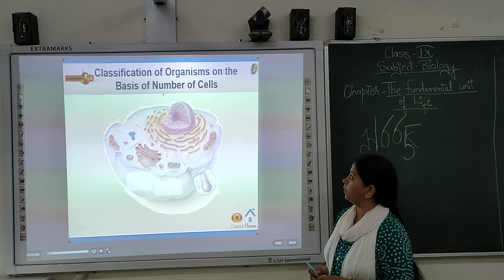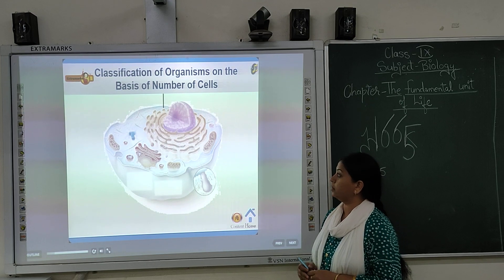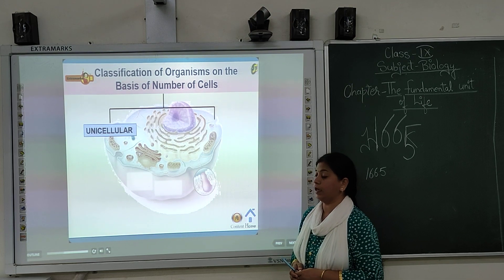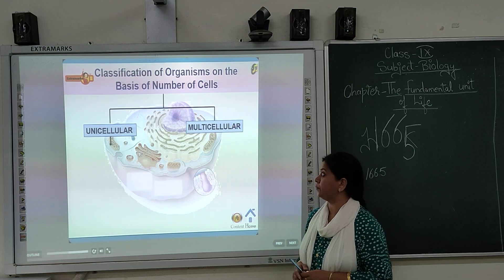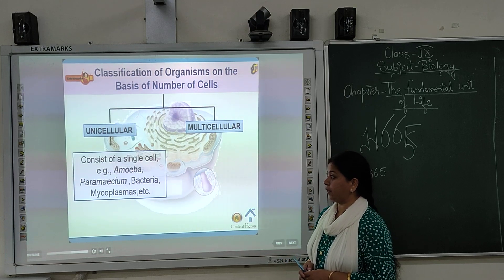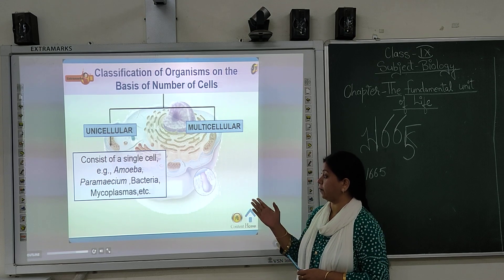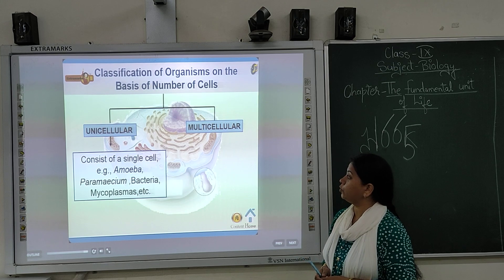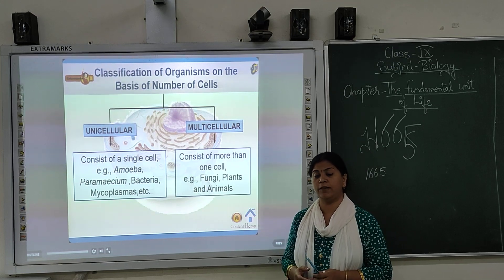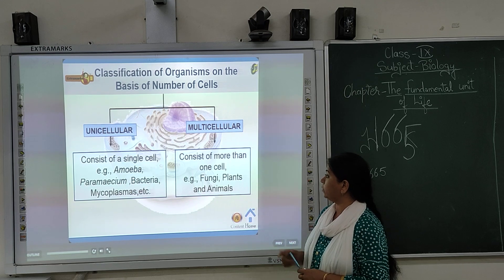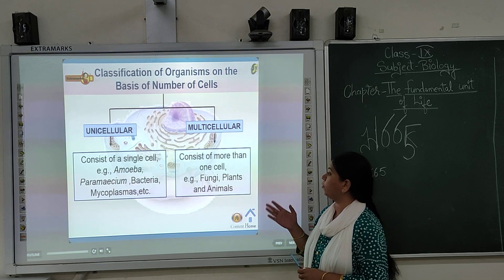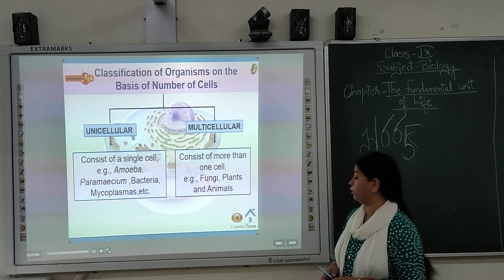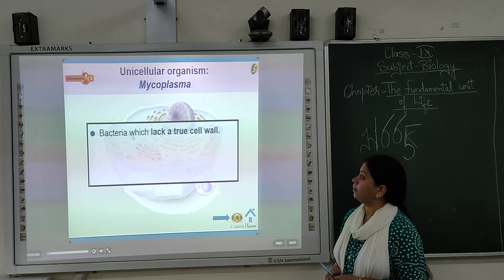You should know the classification of organisms on the basis of number of cells. We can divide organisms into two categories: unicellular organisms, which have only one cell, and multicellular organisms, which have many cells.